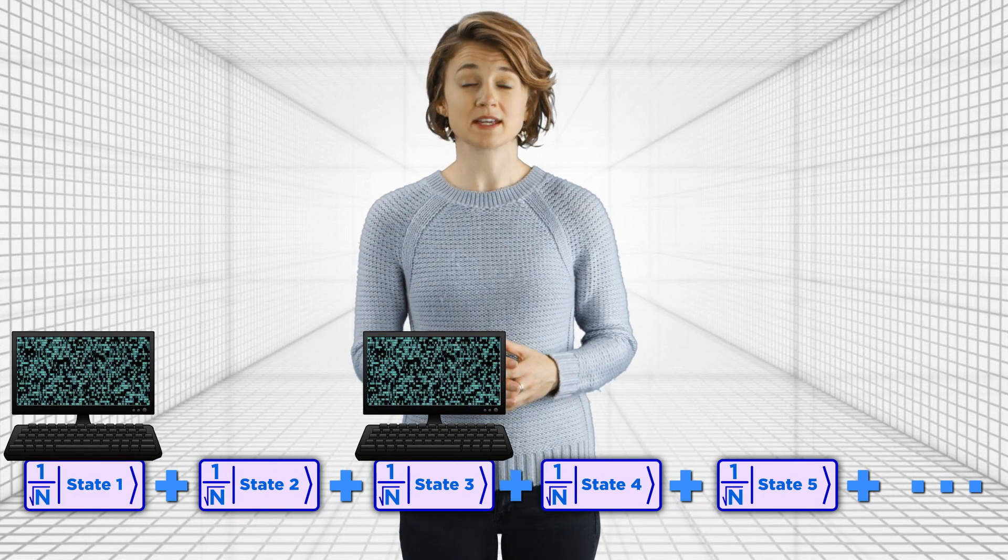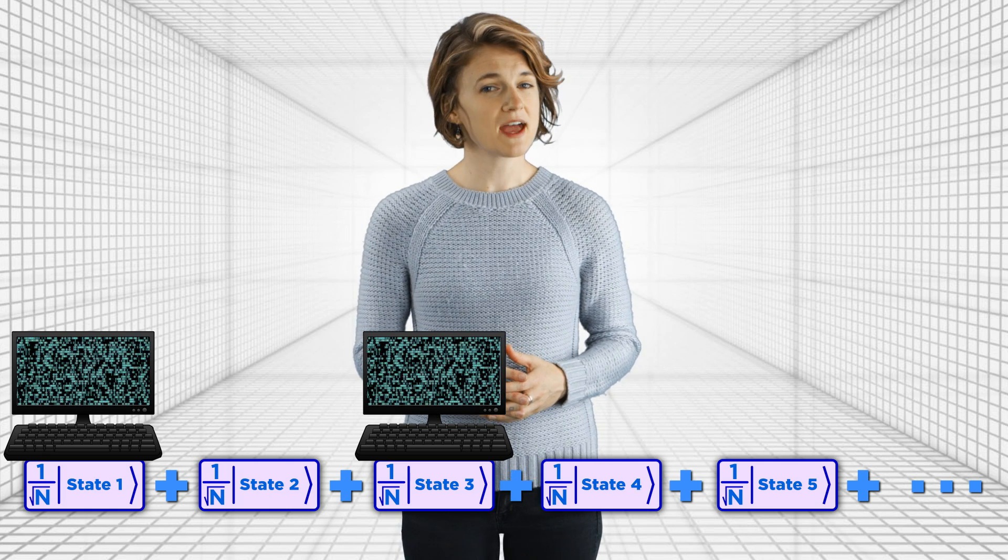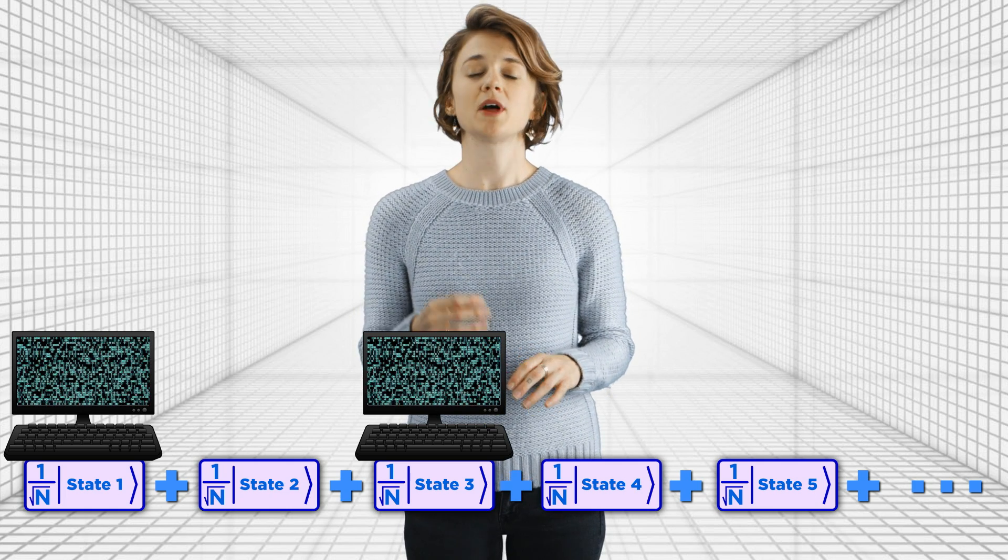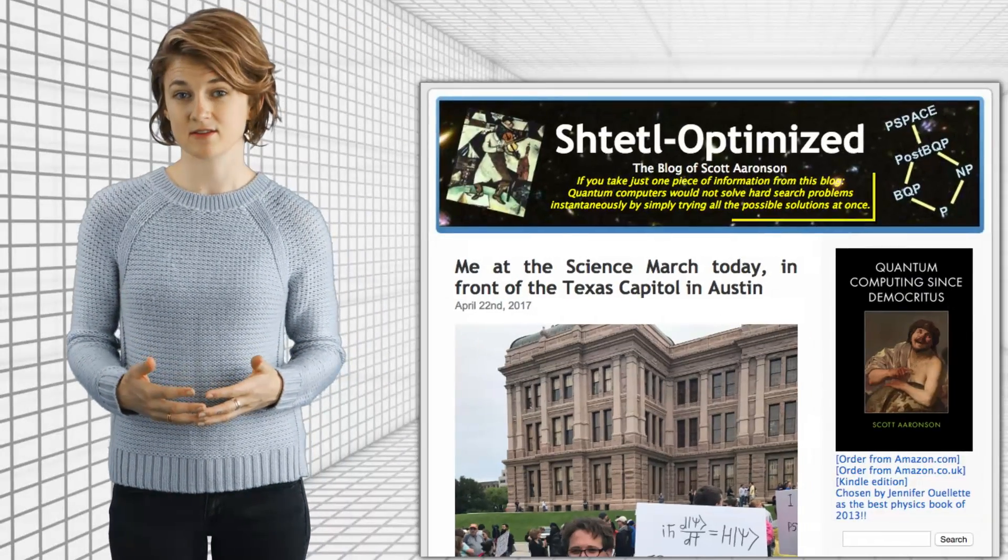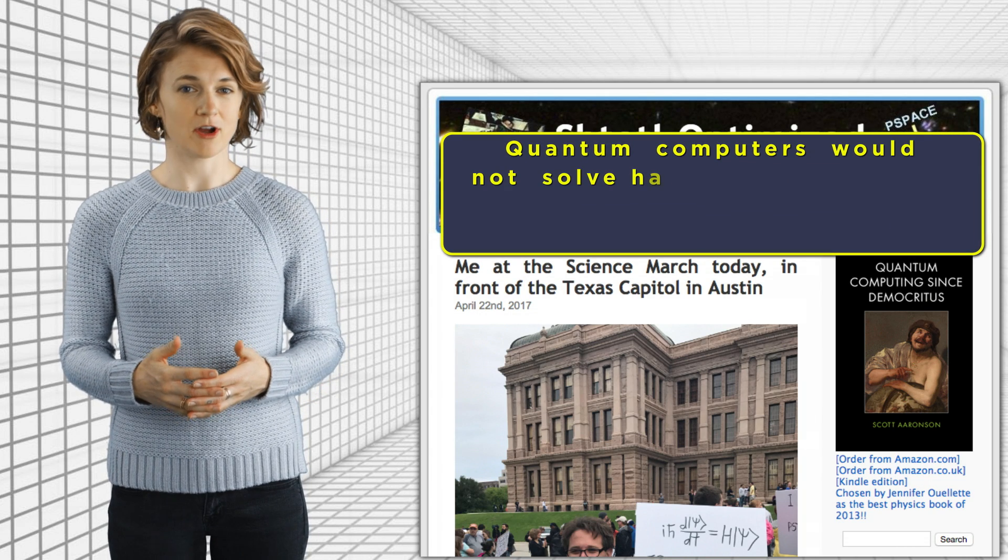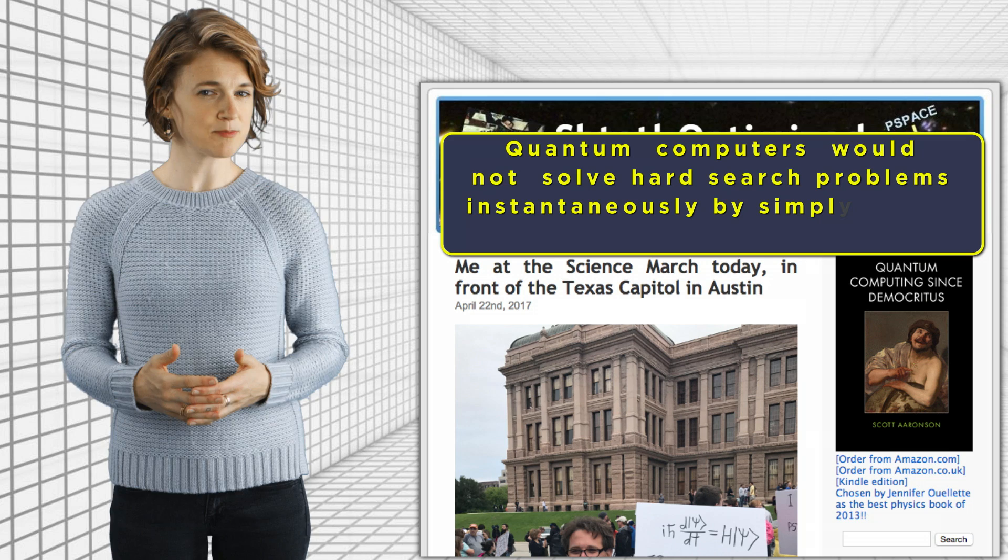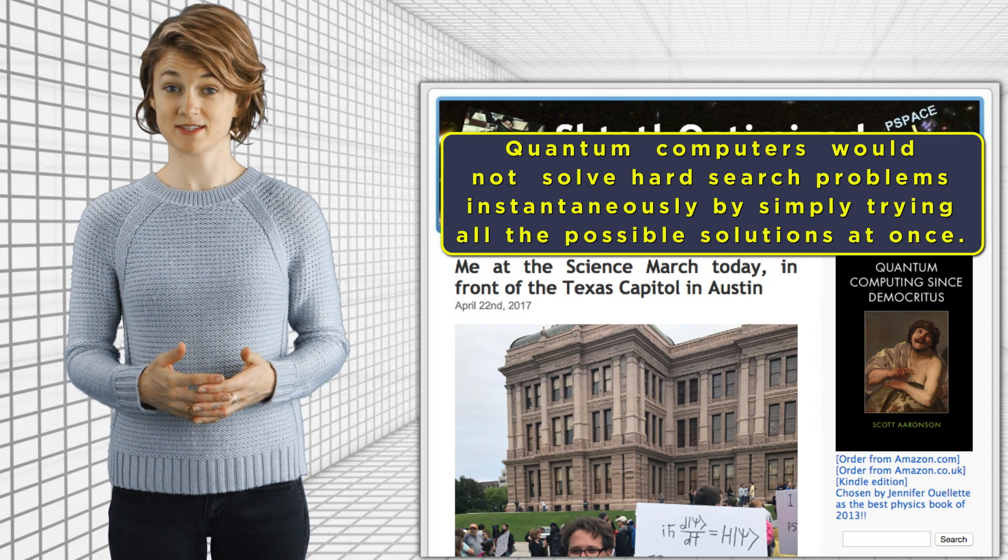In this case, the ones that give the factors of a number. Then when we measure the quantum state, we'll have a high probability of ending up with the correct answer. In fact, that's summarized in the tagline of a fantastic blog written by theoretical computer scientist Scott Aaronson. Quantum computers would not solve hard search problems instantaneously by simply trying all the possible solutions at once. So instead of checking each number smaller than n to see if it's a factor, how does Shor's algorithm find the factors? It needs to utilize the properties of its entire superposition and not just a few of its basic states.